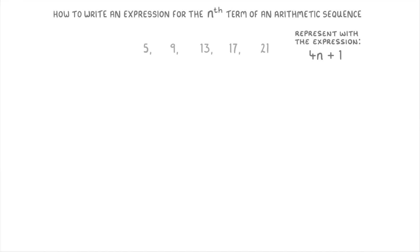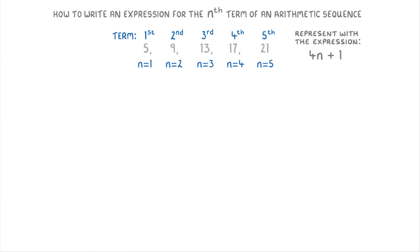If you're not sure what I mean by the word term, each of the numbers in the sequence is known as a term. So 5 is the first term, 9 is the second term, 13 is the third term, and so on. Another way to represent the terms is using the letter n, so for the first term n equals 1, for the second term n equals 2, and so on.